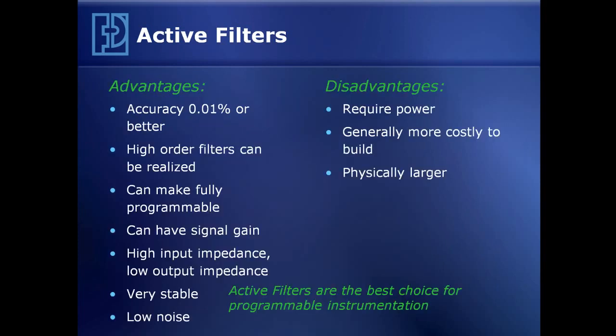Active filters come with a number of advantages. You can realize accuracies of 0.01% or better. You can implement very sharp, high-order filters with active components. You can make the device fully programmable, not only in frequency, but in filter characteristic. You can add an amplifier to the filter to have signal gain or attenuation. And you can build the filter amplifier block with very high input impedance and very low output impedance, so that when you insert it in the signal chain, you get little or no insertion loss. The filters are extremely stable — stable not only with DC stability, but AC stability as well.